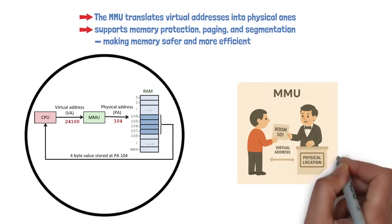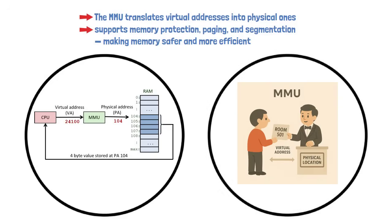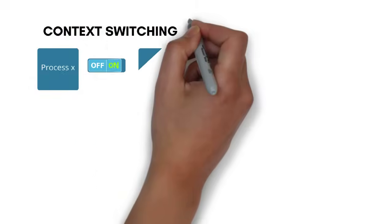Think of the MMU as a hotel concierge. When you ask for room 501, the virtual address, the concierge checks their system and directs you to the actual physical location, while also ensuring you're authorized to access that room in the first place.